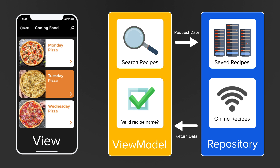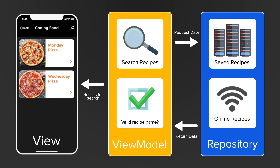Lastly, the View is the visible part of the app. It contains all UI elements and gets events from the ViewModel when it should update its views. Importantly, the View shouldn't contain any business logic — it should only contain logic to directly manipulate views.